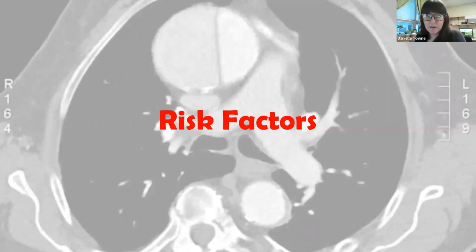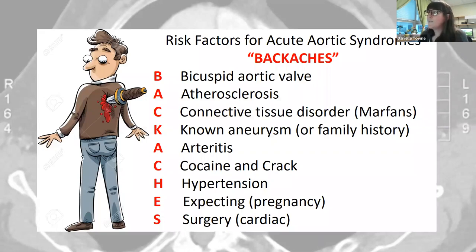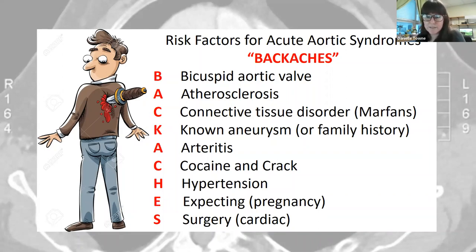What risk factors are there? There's a mnemonic — BACKACHES — for acute aortic syndrome. Individuals with bicuspid aortic valves are about 50% more likely to have a thoracic aortic aneurysm. Atherosclerosis — thickening or hardening of the arteries caused by plaque buildup — can cause instability and weakening of the vessel wall.